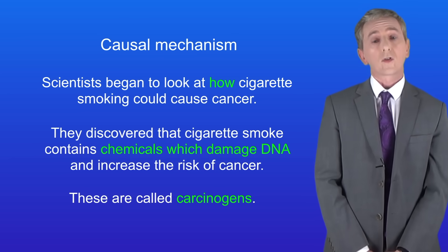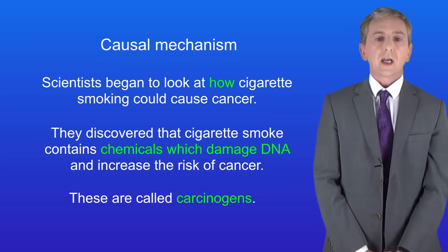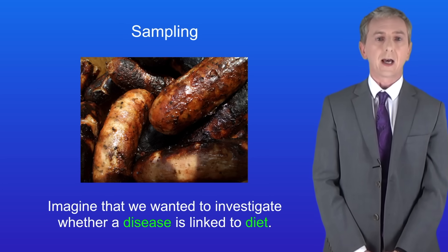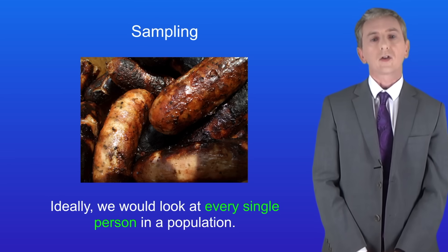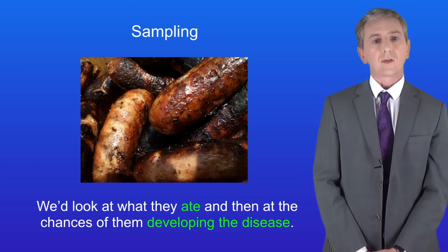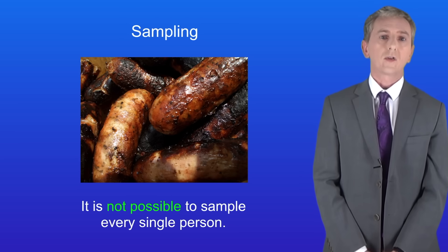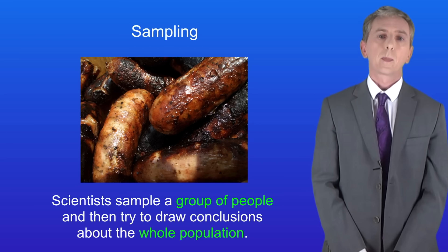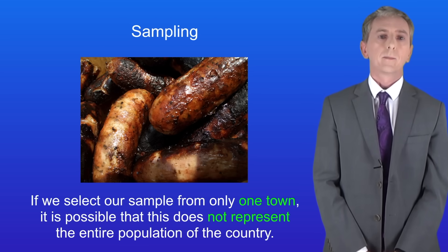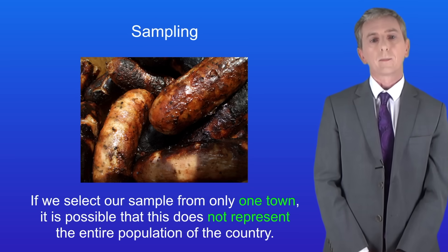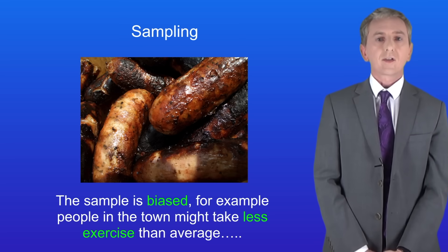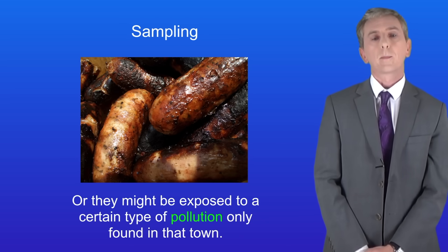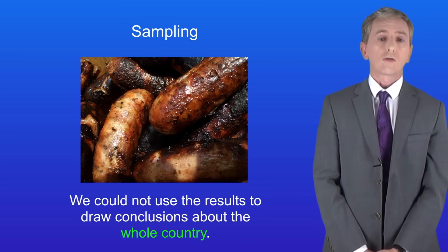Epidemiology involves studying the patterns of disease to determine risk factors, but there's a potential problem — sampling. Imagine we wanted to investigate whether a disease is linked to diet. Ideally we'd look at every single person in the population, but in practice that's not possible. So scientists sample a group of people and try to draw conclusions about the whole population. If we select our sample from only one town, it may not represent the entire population — the sample could be biased. For example, people in that town might take less exercise than average or be exposed to a certain type of pollution only found there, meaning we could not use the results to draw conclusions about the whole country.